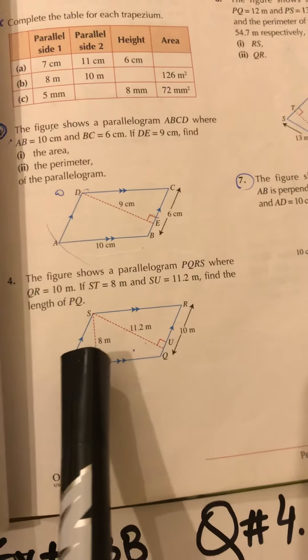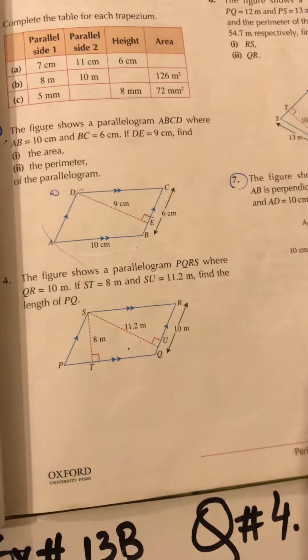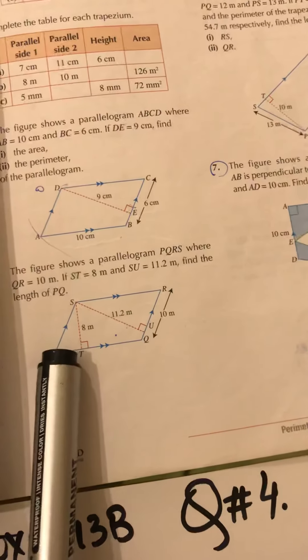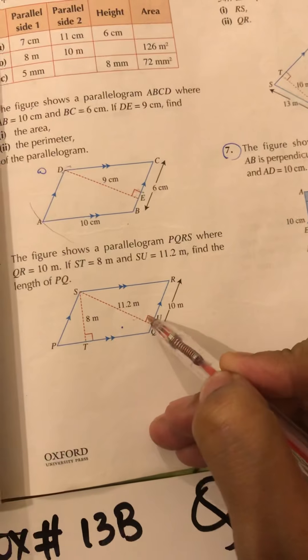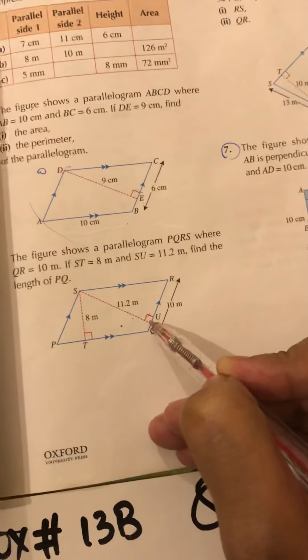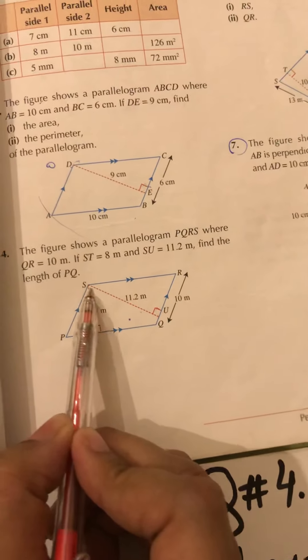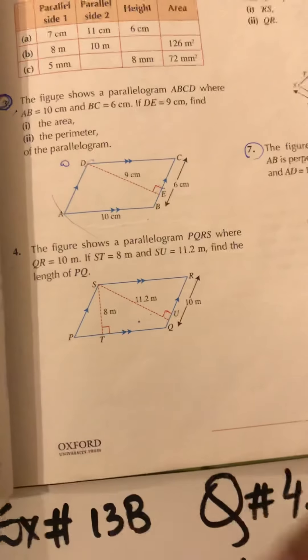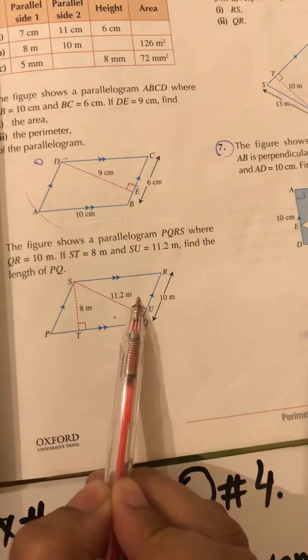And SU is 11.2 meters. Find the length PQ. Point to be noted: we have got two perpendicular heights. How did we evaluate that these two are the perpendicular heights? By this block, this 90 degree block represents that it is an angle of 90 degrees. Therefore this dotted red line is actually the perpendicular height of the parallelogram.